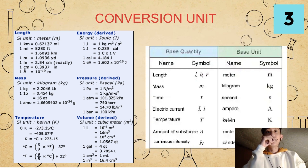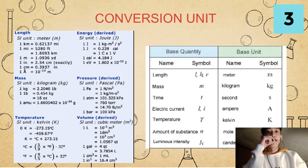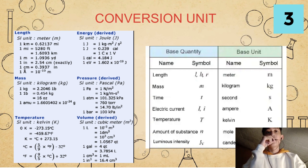For our temperature, our SI unit is Kelvin. For every 0 Kelvin, there is negative 273.15 degrees Celsius, or negative 459.67 Fahrenheit. To get Kelvin, we use the formula K equals degrees Celsius plus 273.15. Degrees Celsius equals parenthesis 5 over 9 times Fahrenheit minus 32 degrees. To get Fahrenheit, it equals parenthesis 9 over 5 times degrees Celsius, plus 32 degrees.